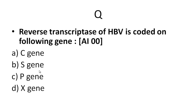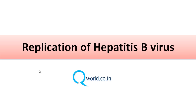Let us look at a question asked from this topic: 'The reverse transcriptase of hepatitis B virus is coded on which gene?' We know that reverse transcriptase is essentially DNA polymerase, and polymerase is coded by the P gene.